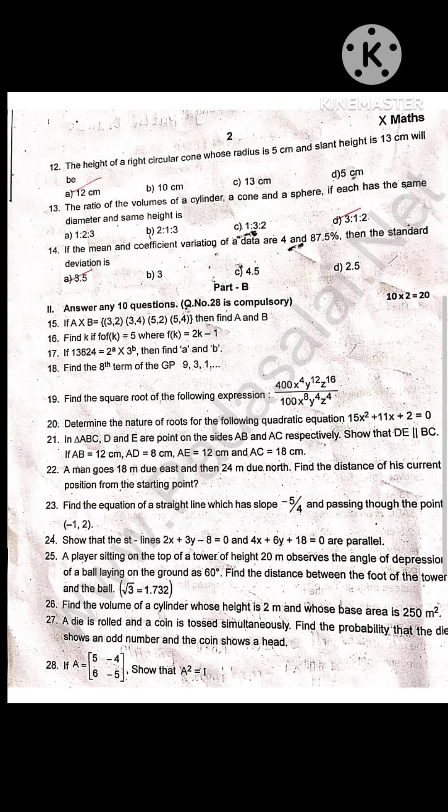The height of a right circular cone whose radius is 5 centimeter and slant height is 13 centimeter will be 12 centimeter.